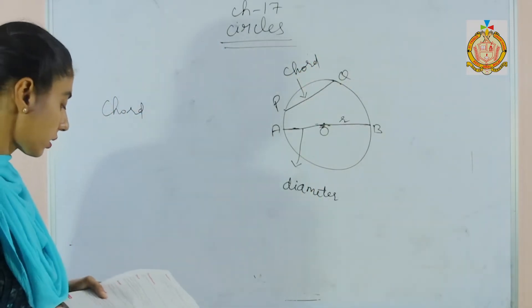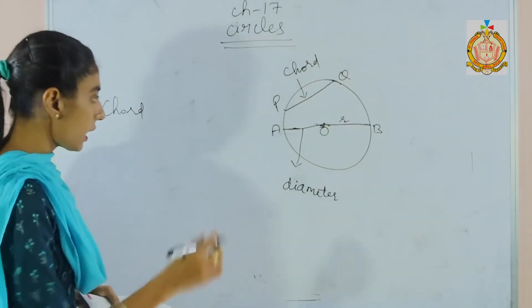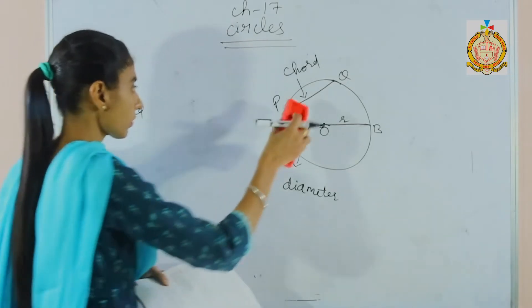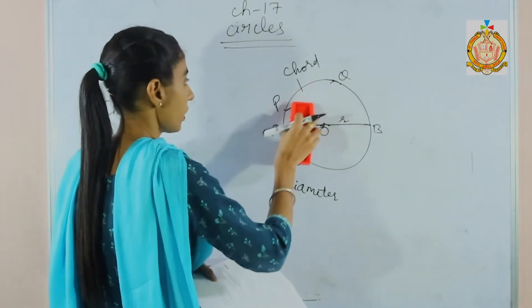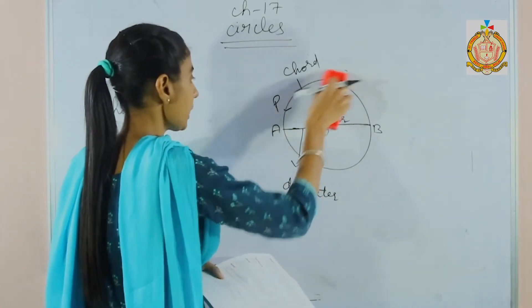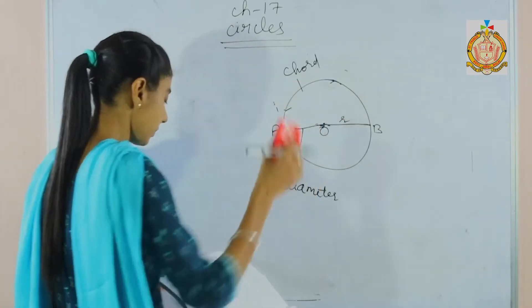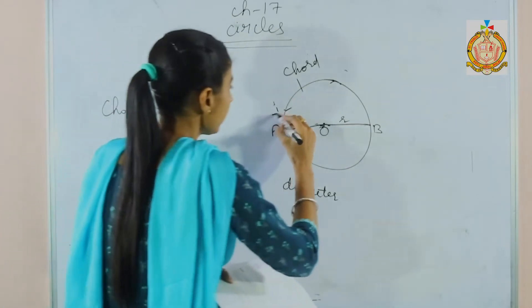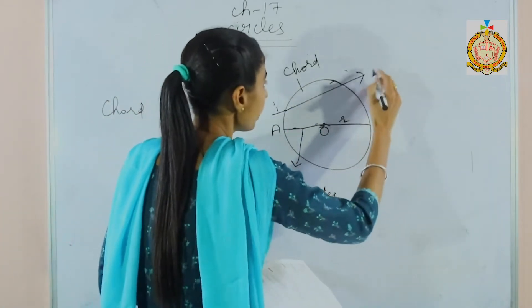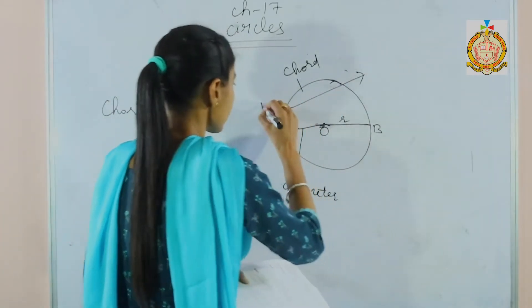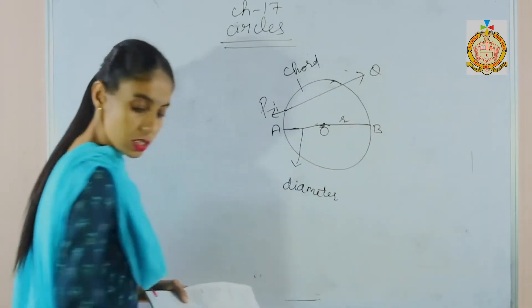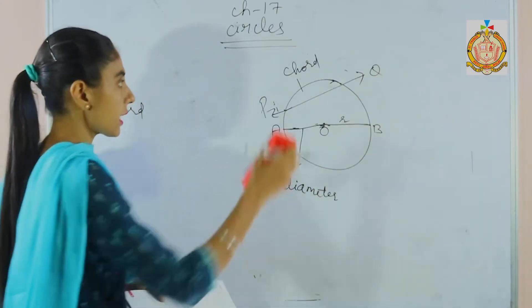Next is the secant. A line which intersects the circle at two different points is called a secant.